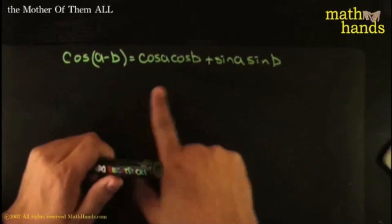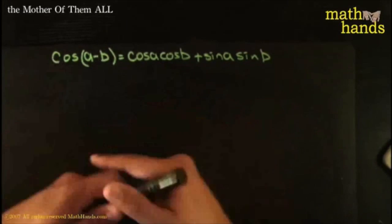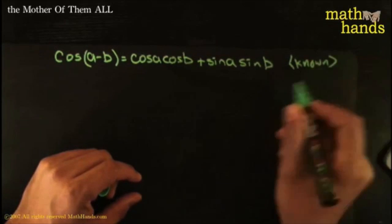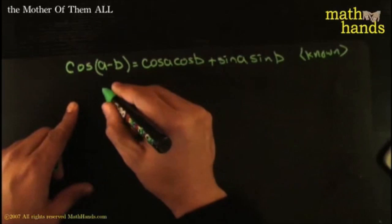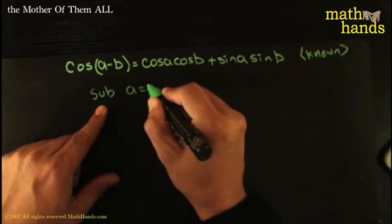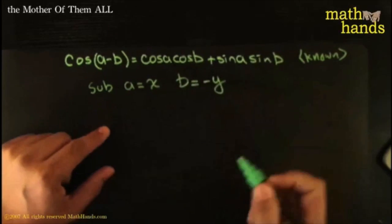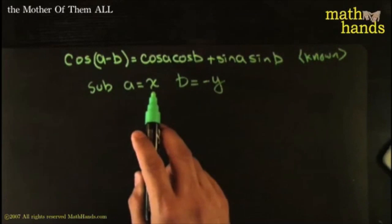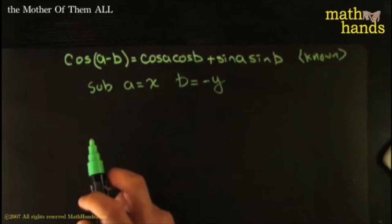So if this is an identity that's true for all possible values of A and B, then I can substitute anything I want for A and B. Here's the key tweak: substitute A equal to X, and substitute B equal to negative Y. Wherever you see A, substitute X; and wherever you see B, substitute the quantity negative Y. And see what happens.